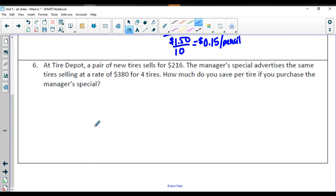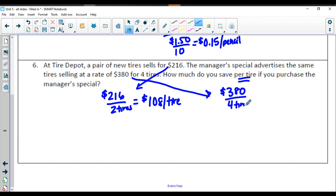Number 6: At Tire Depot, a pair of new tires sells for $216. The manager's special advertises the same tires selling at a rate of $380 for 4 tires. How much do you save per tire if you purchase the special? So at $216, this gets you 2 tires. $216 divided by 2 is going to be $108 per tire. If you do the manager's special, you're paying $380, and that gets you 4 tires. $380 divided by 4 is going to be $95 per tire.